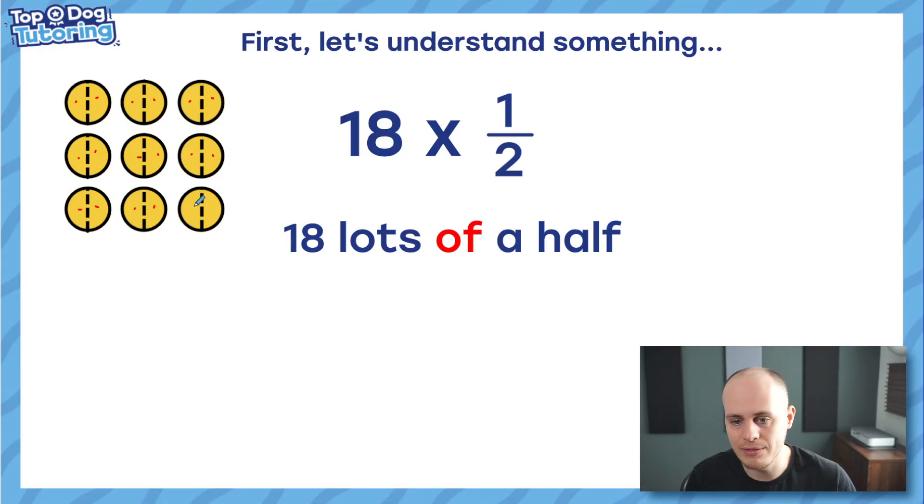And 18 halves, if you count this up in twos, two, four, six, eight, 10, 12, 14, 16, 18, there's 18 halves there, makes just one, two, three, four, five, six, seven, eight, nine wholes. So the answer to that question is nine.